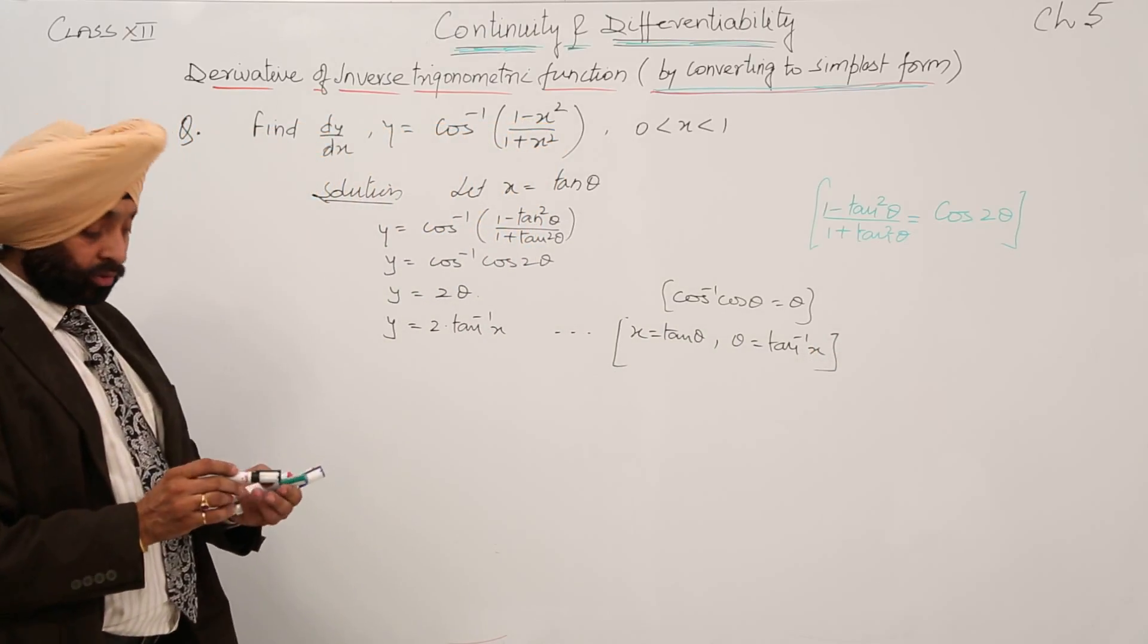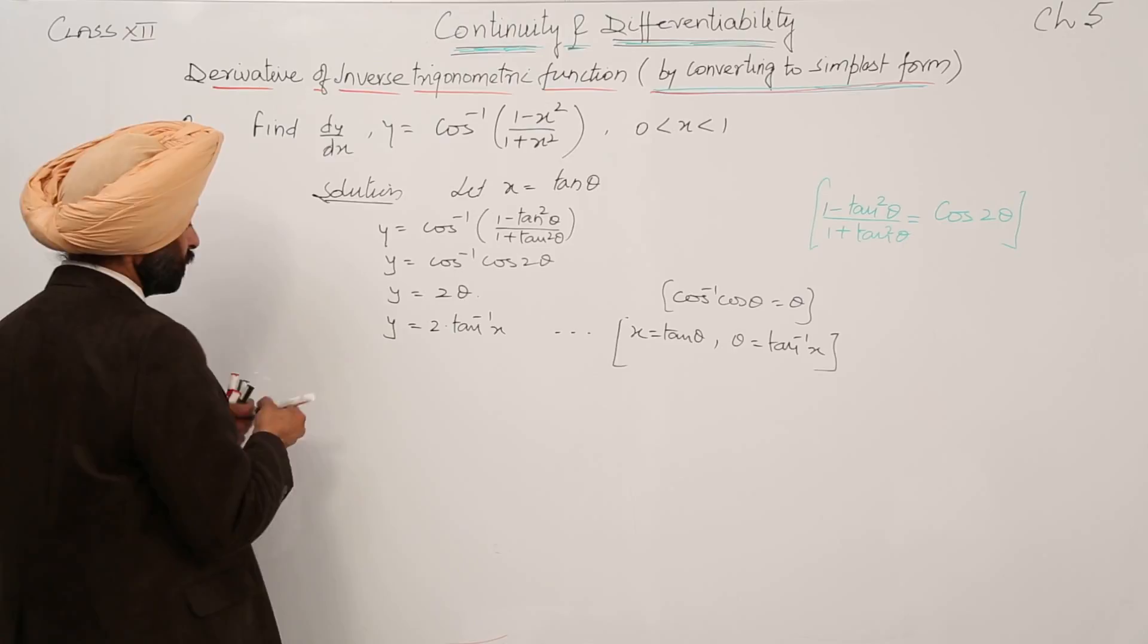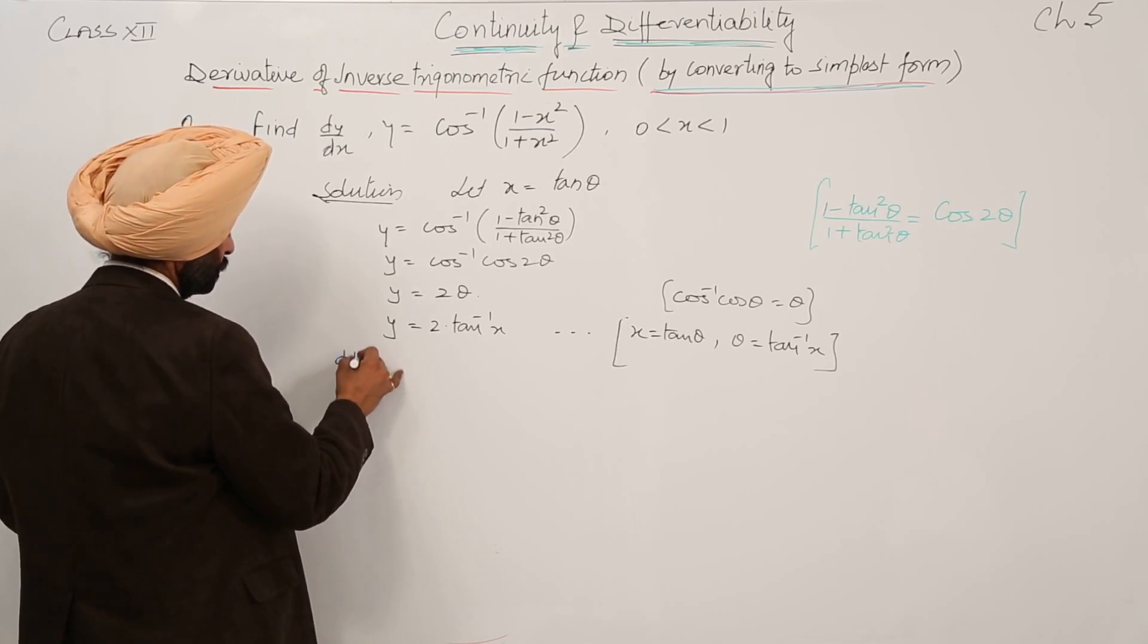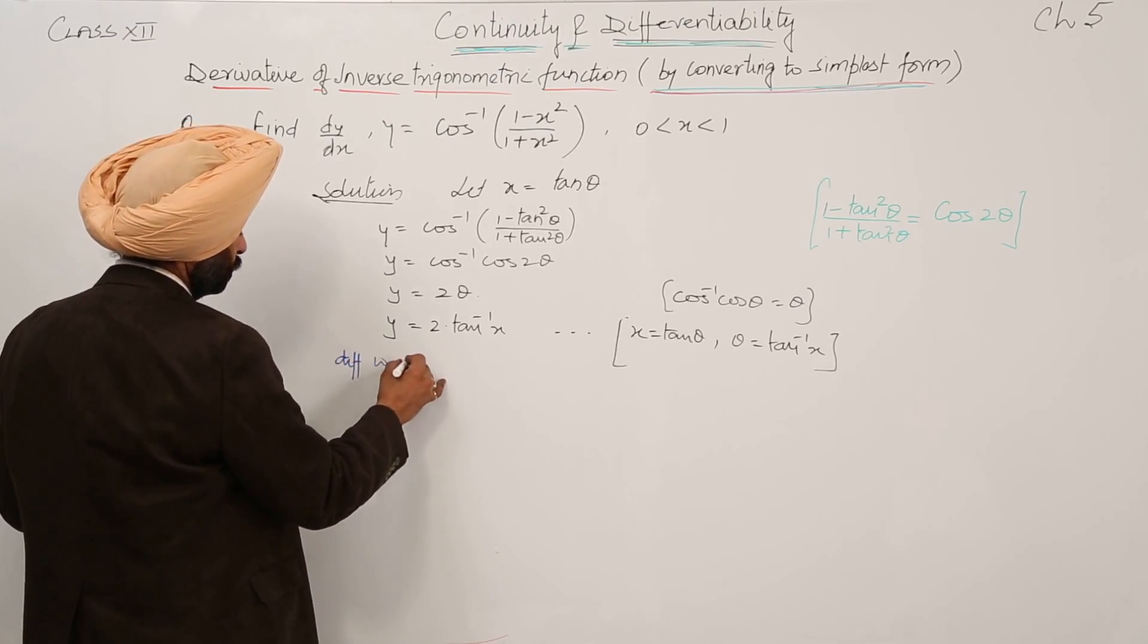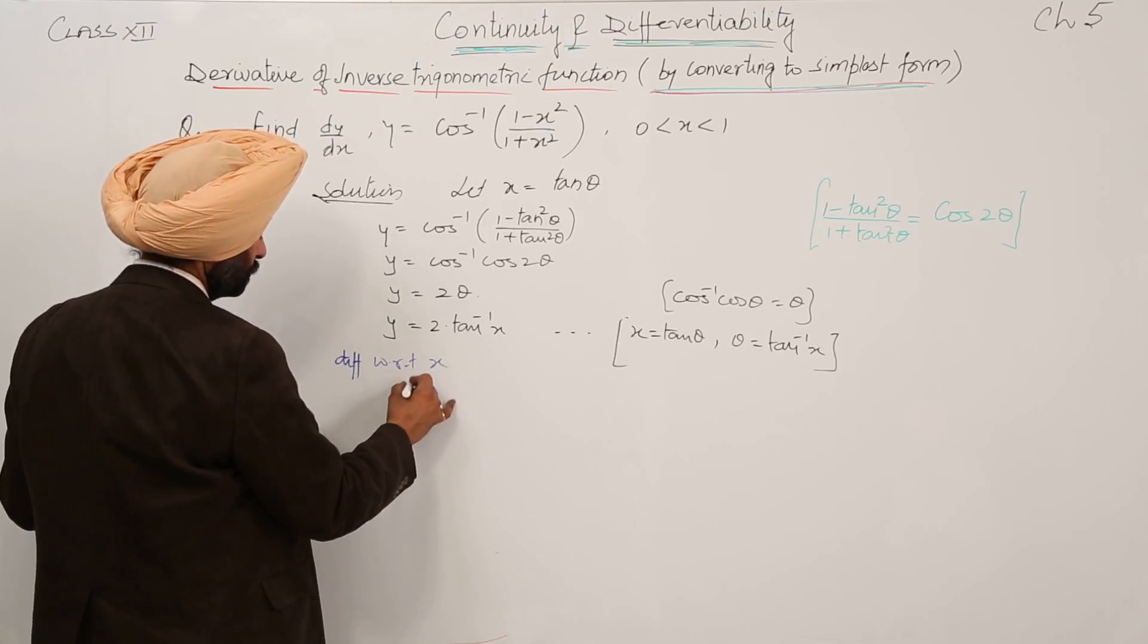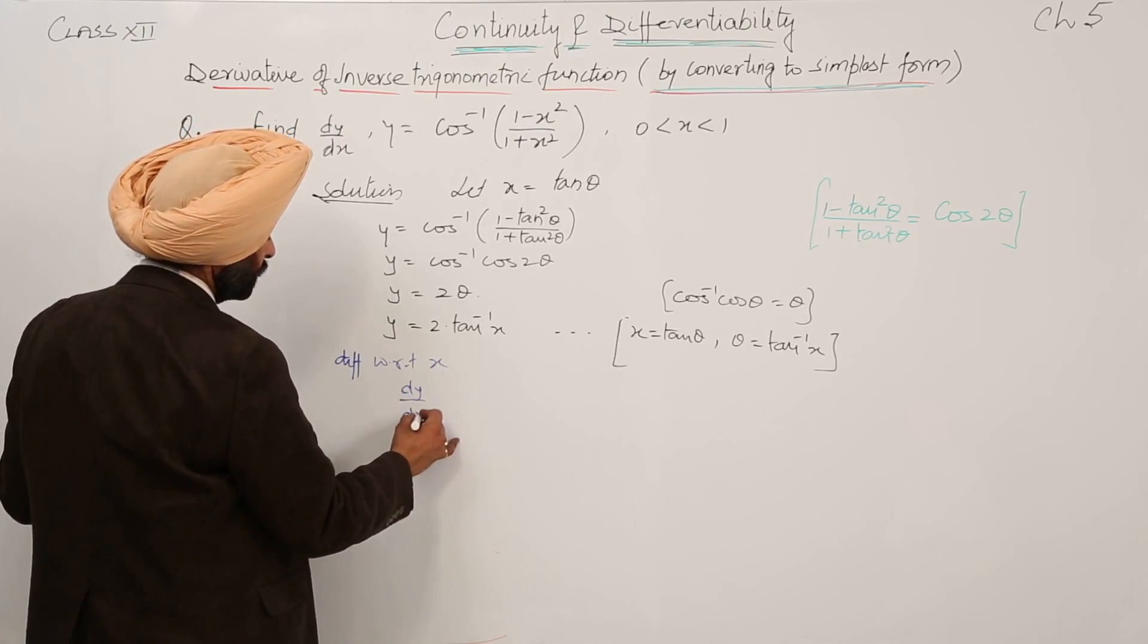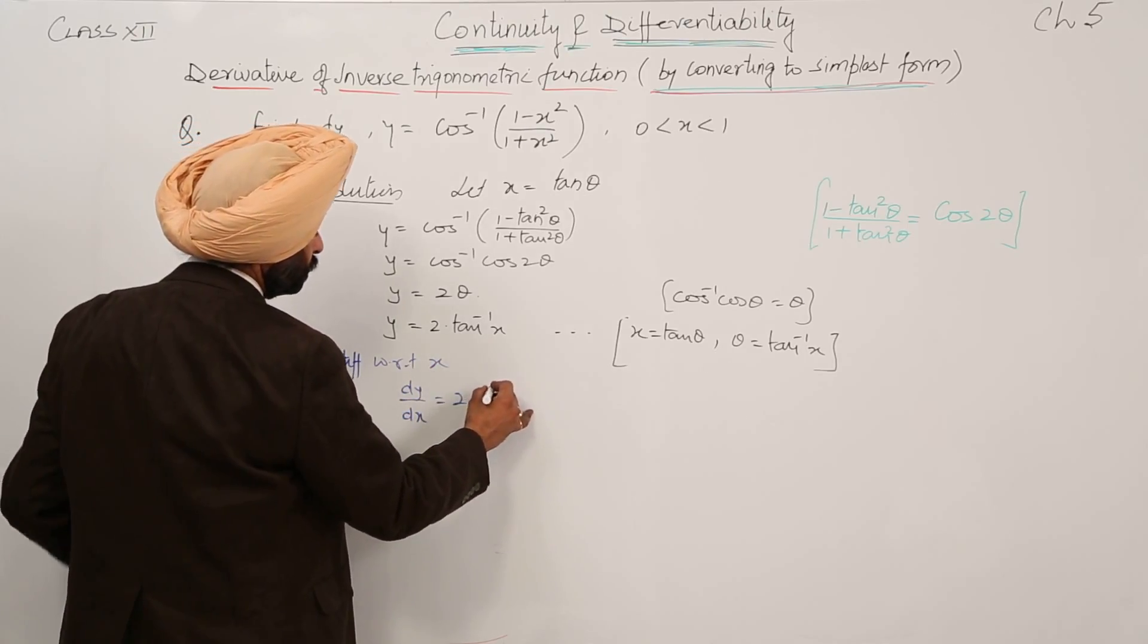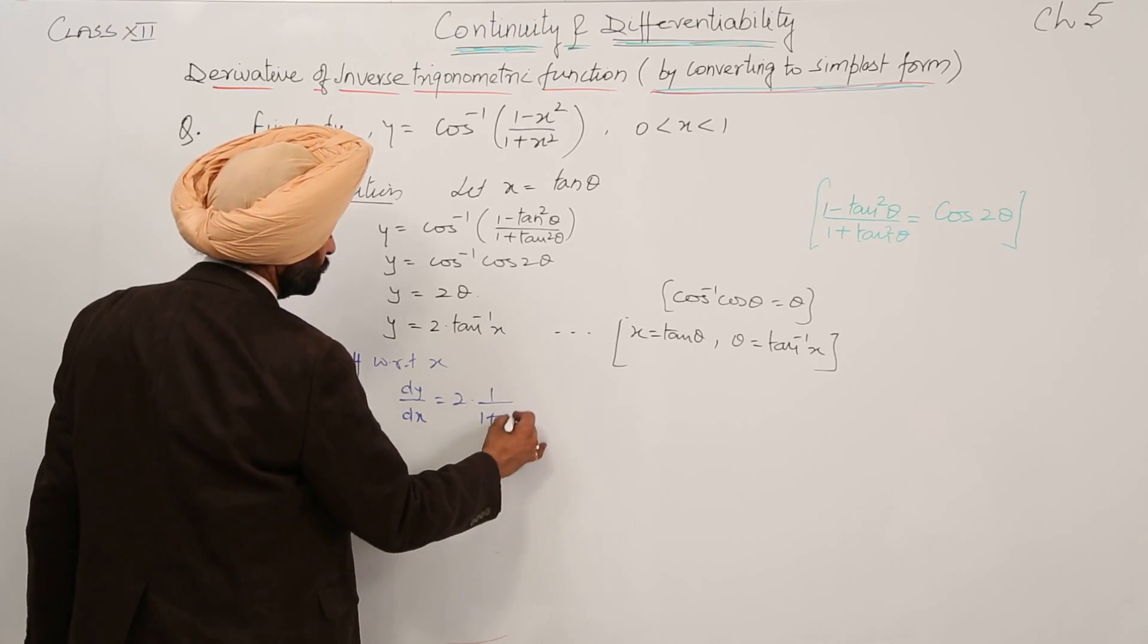Now, here we are going to differentiate this part. Now, differentiating with respect to x, dy by dx is equal to 2 with 1 upon (1 plus x square).